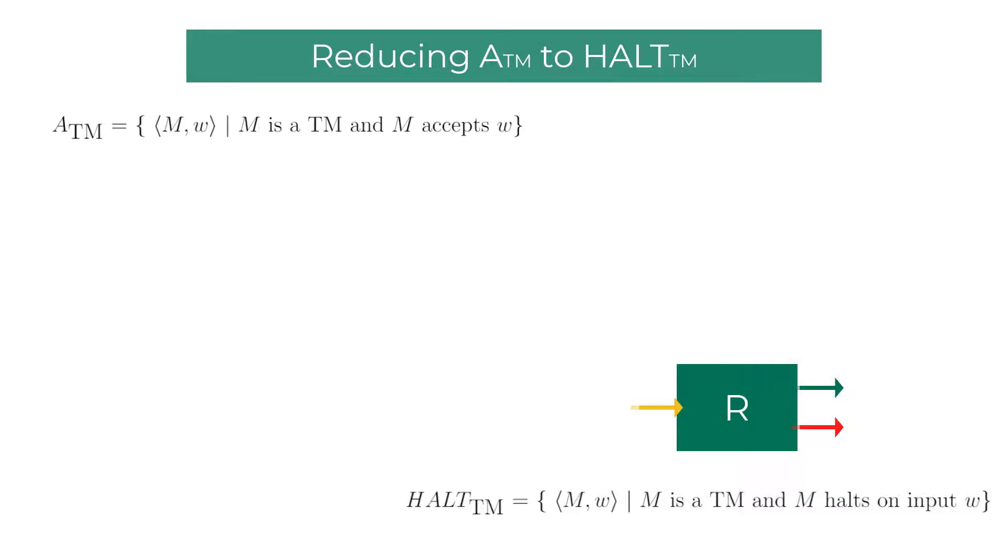Can we use this magic decider box of HALTTM to build a decider for ATM? Turns out we can. Here is the formal proof. I will try my best to explain this proof visually.